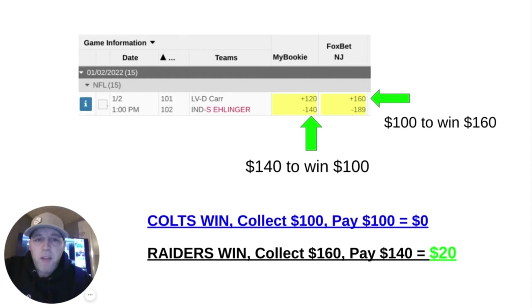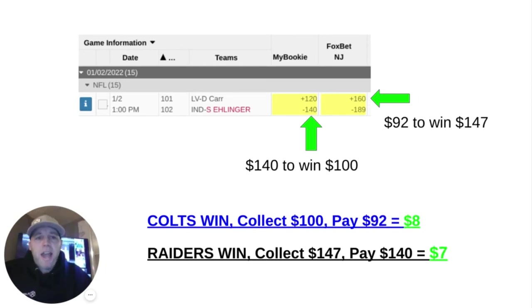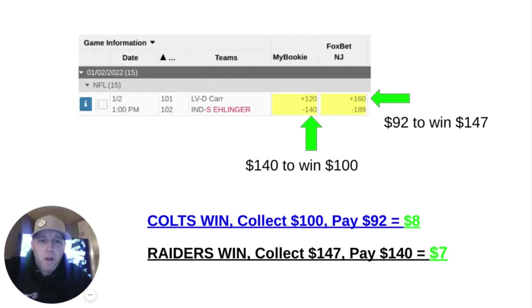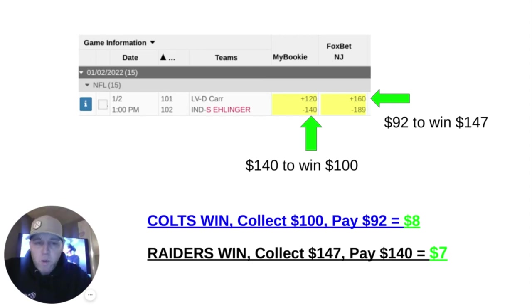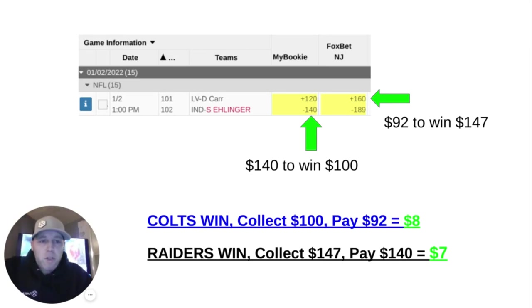In this example, you only win if the underdog Raiders win. But by doing some simple math, you can guarantee a profit by changing the risk amount. Let's say you risk $92 on the Raiders at plus 160 odds — that would pay out roughly $147. And then you risk $140 to win $100 on the Colts at minus 140 odds. If the Colts win, you'd collect $100 and pay the $92, which equals an $8 profit. If the Raiders win, you'd collect the $147 but pay out the Colts loss of $140, giving you a profit of $7. And of course, a tie — no money exchanges. This would be a true arbitrage bet: no matter the outcome, you profit.